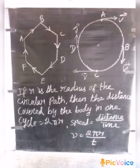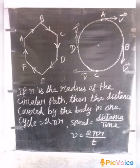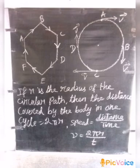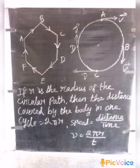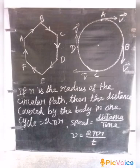Let's talk about the formula. Speed is equal to distance by time. For circular motion, the distance traveled is the circumference of the circle, which is 2πr. Therefore, the speed is equal to 2πr divided by t. That is the formula for uniform circular motion: speed = 2πr/t.